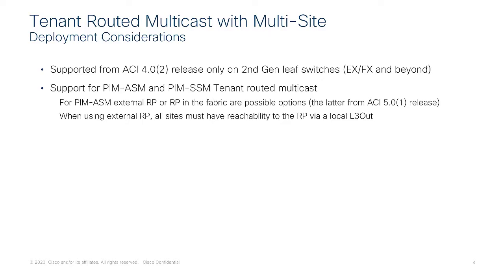There is support for PIM ASM and PIM SSM. For PIM ASM, we need to deploy a rendezvous point, and both options are now supported: an external RP located outside the fabric, or an RP defined inside the fabric. This is possible with multi-site from ACI 5.0.1 release. When using an external RP, we need to ensure that all sites have reachability to that external RP via a local L3 out, which needs to be active for PIM sparse mode forwarding to work.